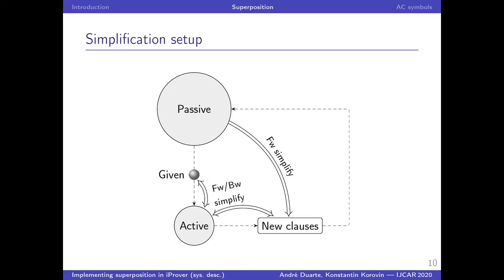This may be useful because, not only because the passive set is much larger, but also simplifying equations in active is much more valuable. Because if you remove something from active, less generating inference is being done and less new clauses being generated.